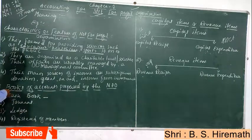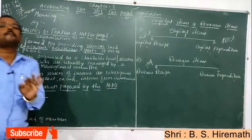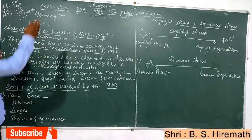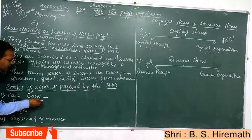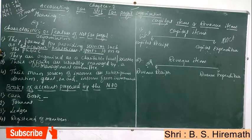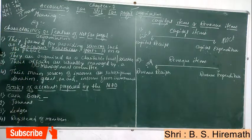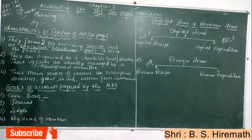The second part is books of accounts prepared by not-for-profit organizations. What type of books are prepared? First is the cash book, which records cash inflows and outflows. It is a summary of cash and bank transactions.